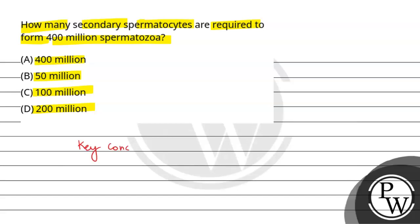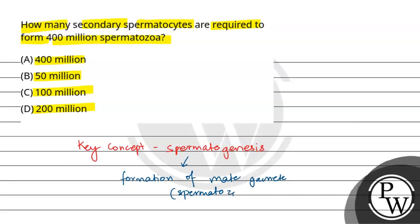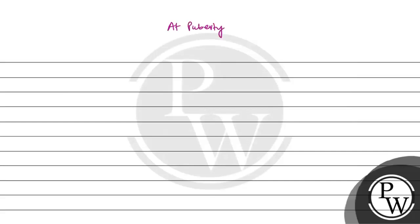The key concept for this question is spermatogenesis. Spermatogenesis is basically the process of formation of the male gamete, which is spermatozoa. So in spermatogenesis, first of all, at puberty, the spermatogonia undergo mitotic differentiation.